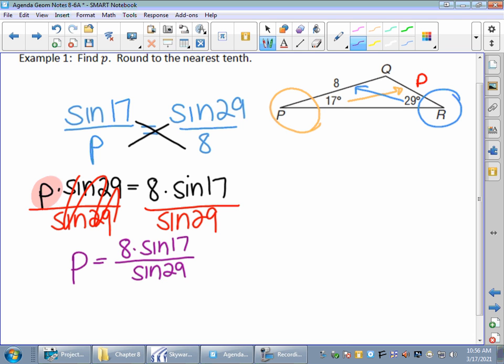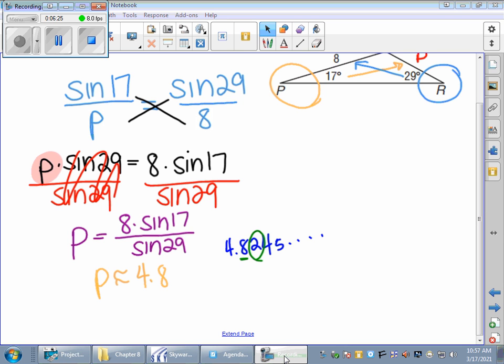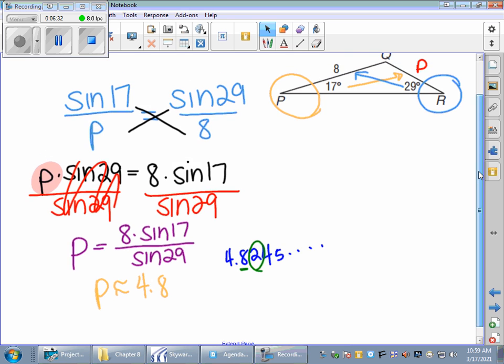When I do this problem, I'm going to end up with P is approximately - I ended up with a 4.8. I'm going to round to the nearest tenth. Make sure you try the calculator part of it. Don't just believe me, because what happens if you can't make that work on your own? When I did this problem, I ended up with a 4.824, 5, and so on. One number after the decimal, so the 2 tells me to stay where I'm at. Don't go up. We've got ourselves a 4.8 is the approximate length of side P.